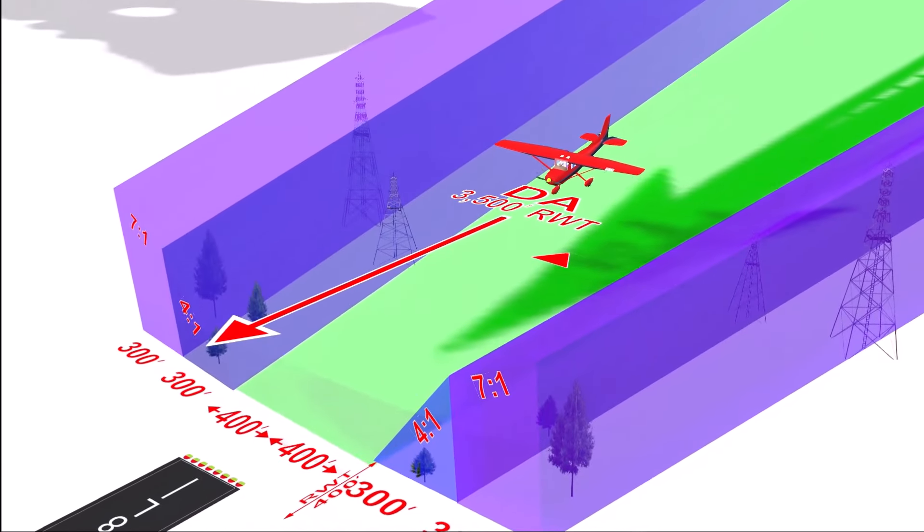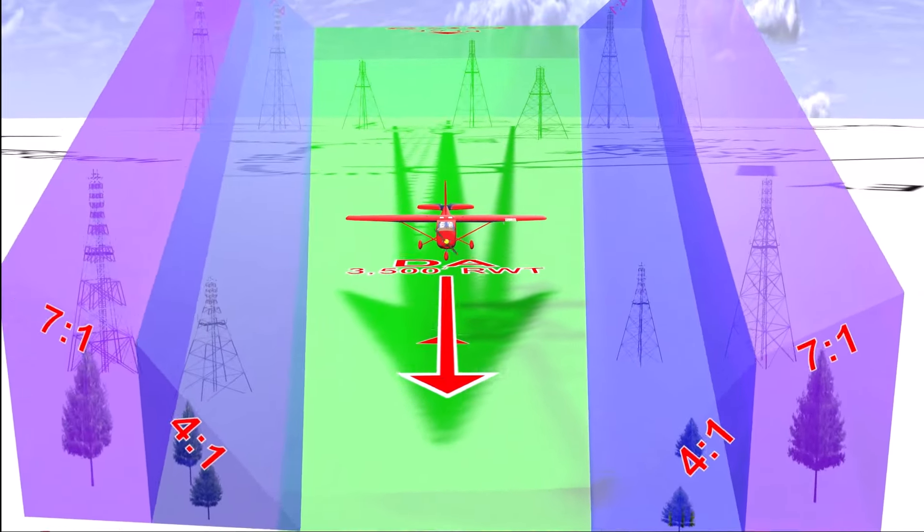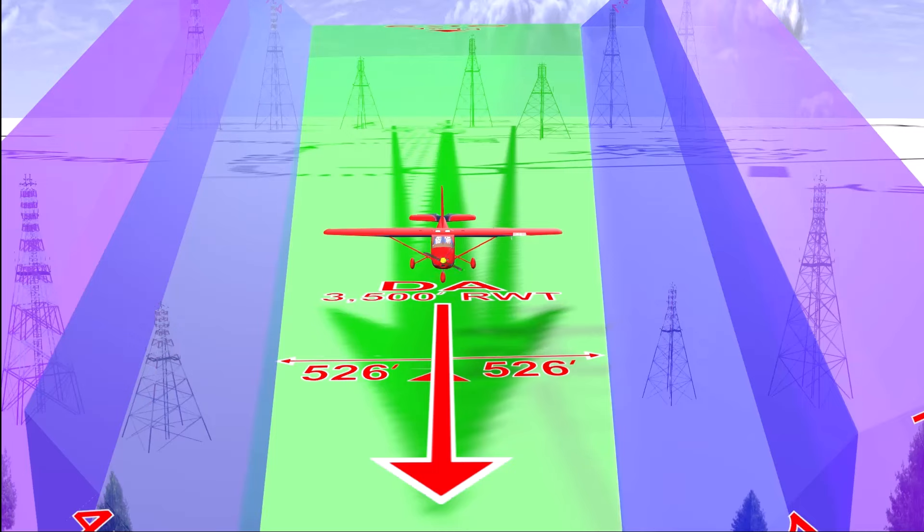For instance, at decision altitude, the obstacle-protected airspace at 3,500 feet from the runway can be as little as 526 feet to either side of the runway centerline.